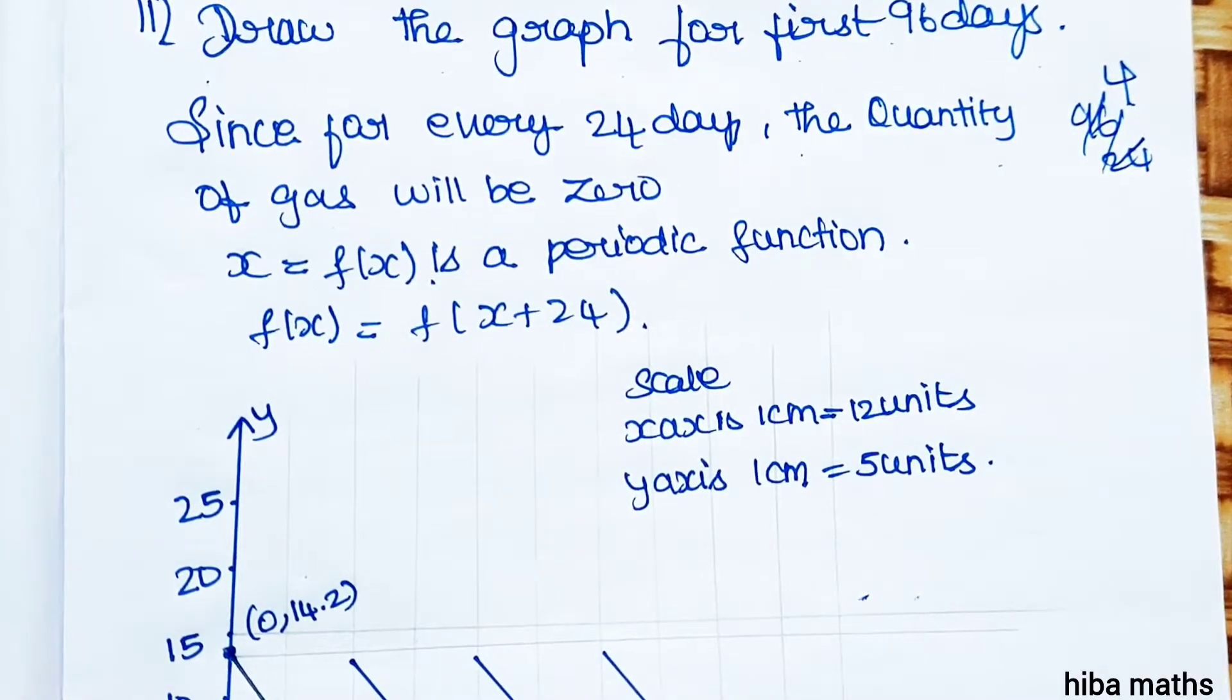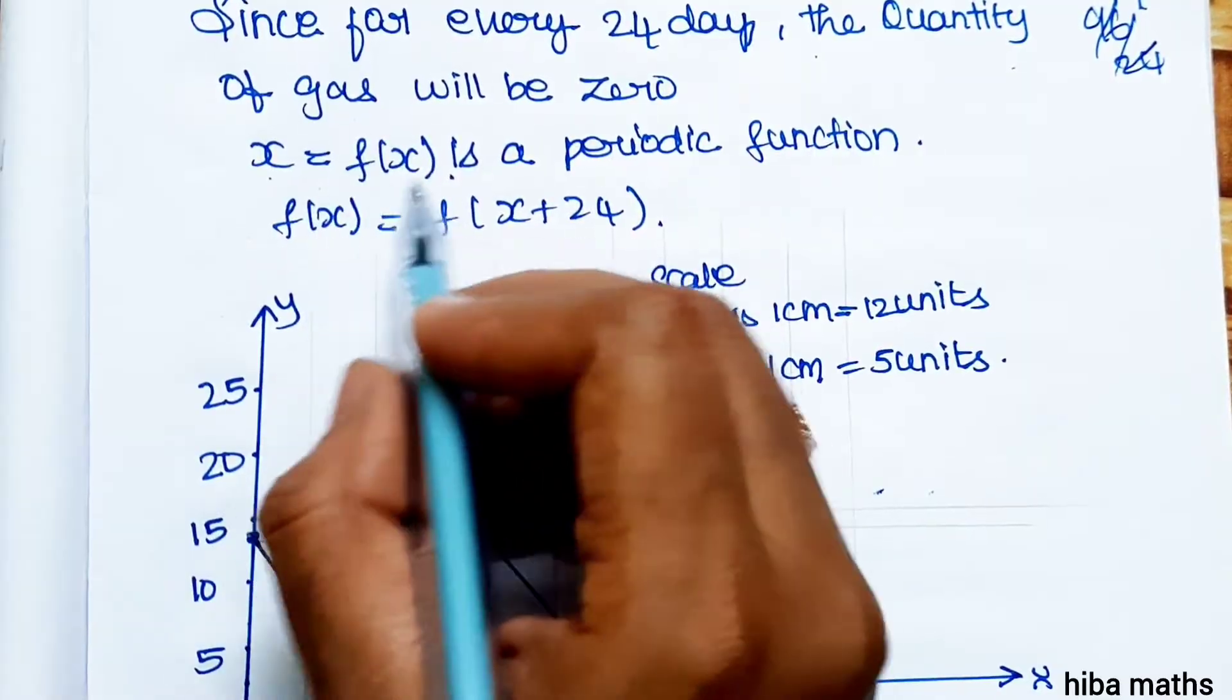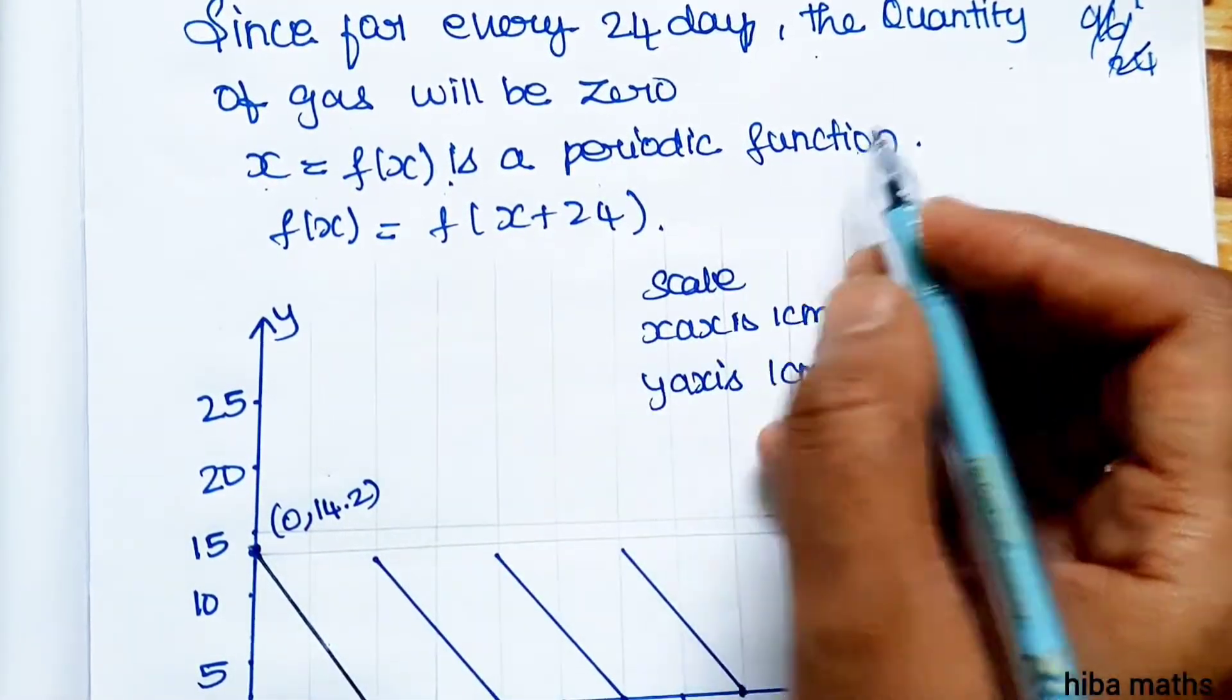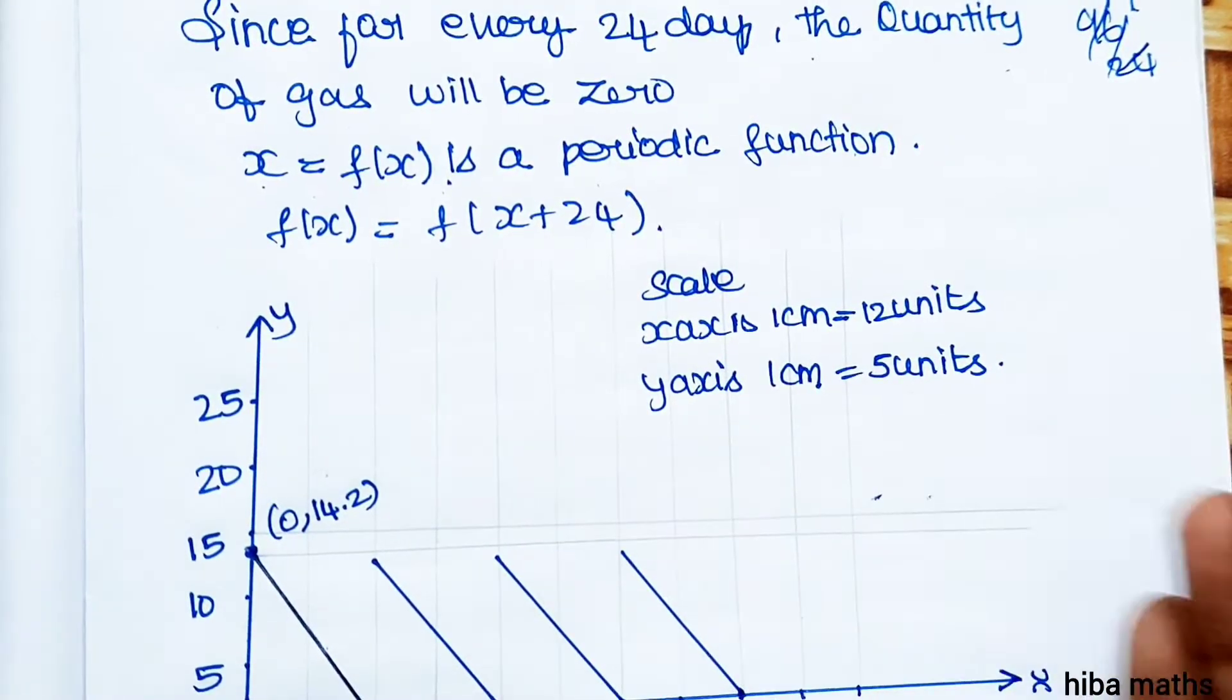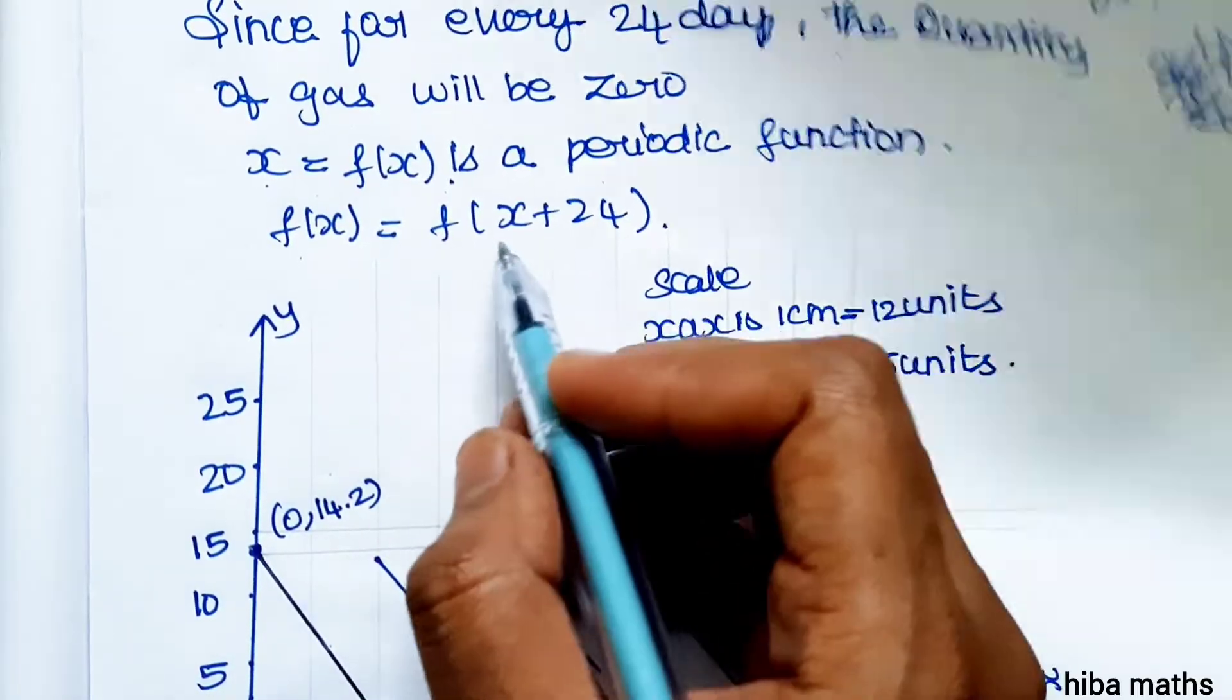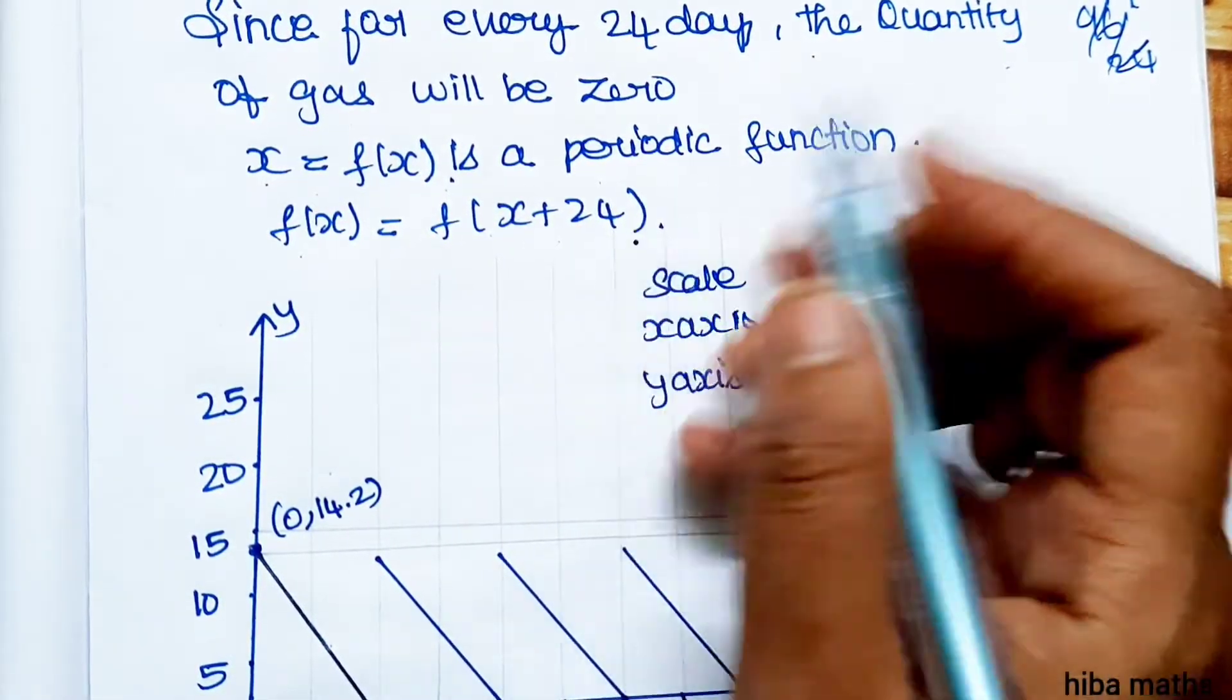For 96 days, we need 4 cylinders. Therefore, f(x) is a periodic function. After every 24 days, we change our cylinder, so f(x) = f(x + 24).